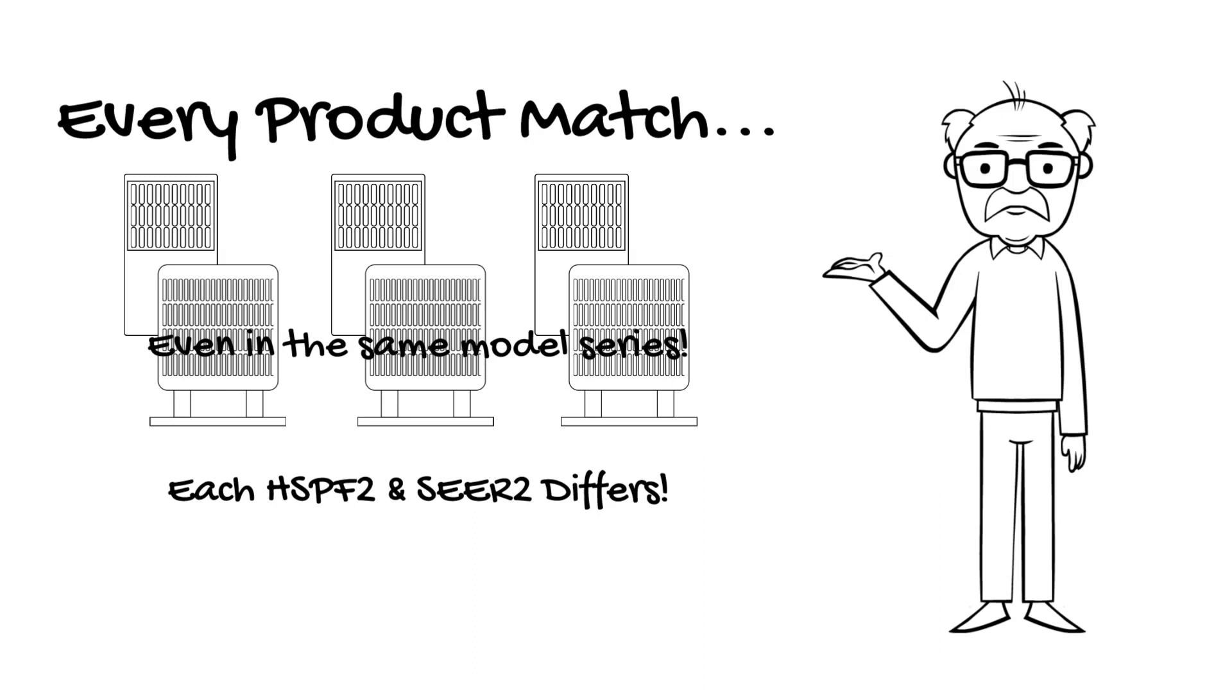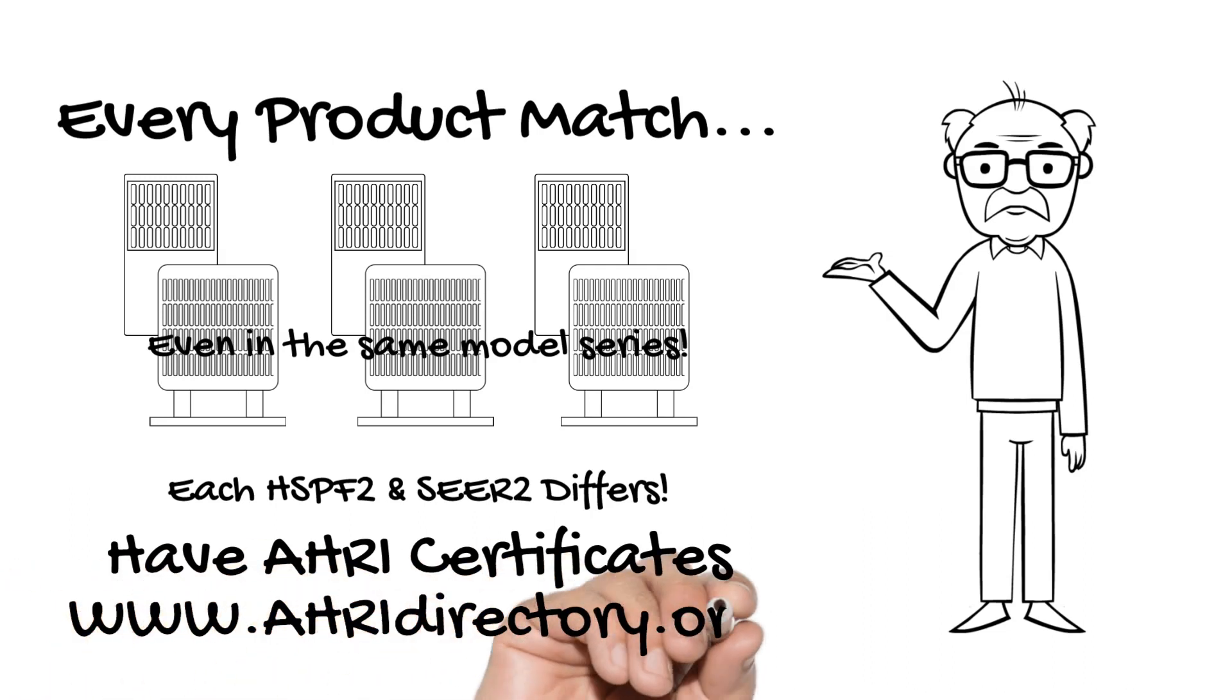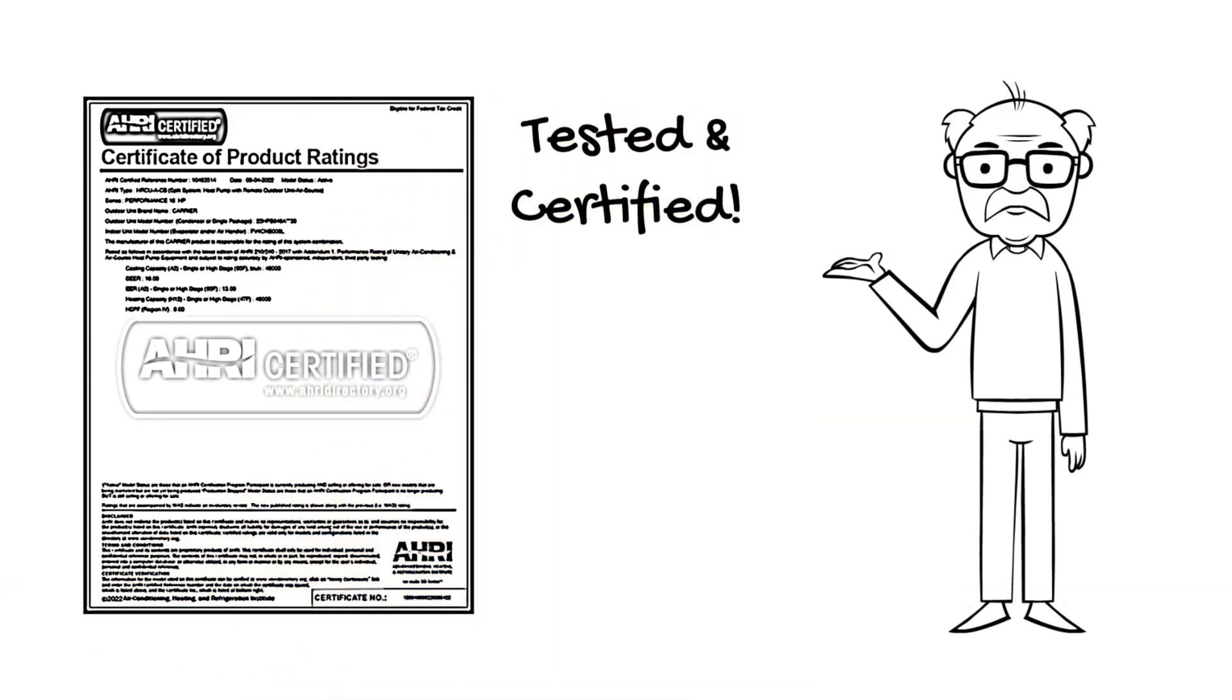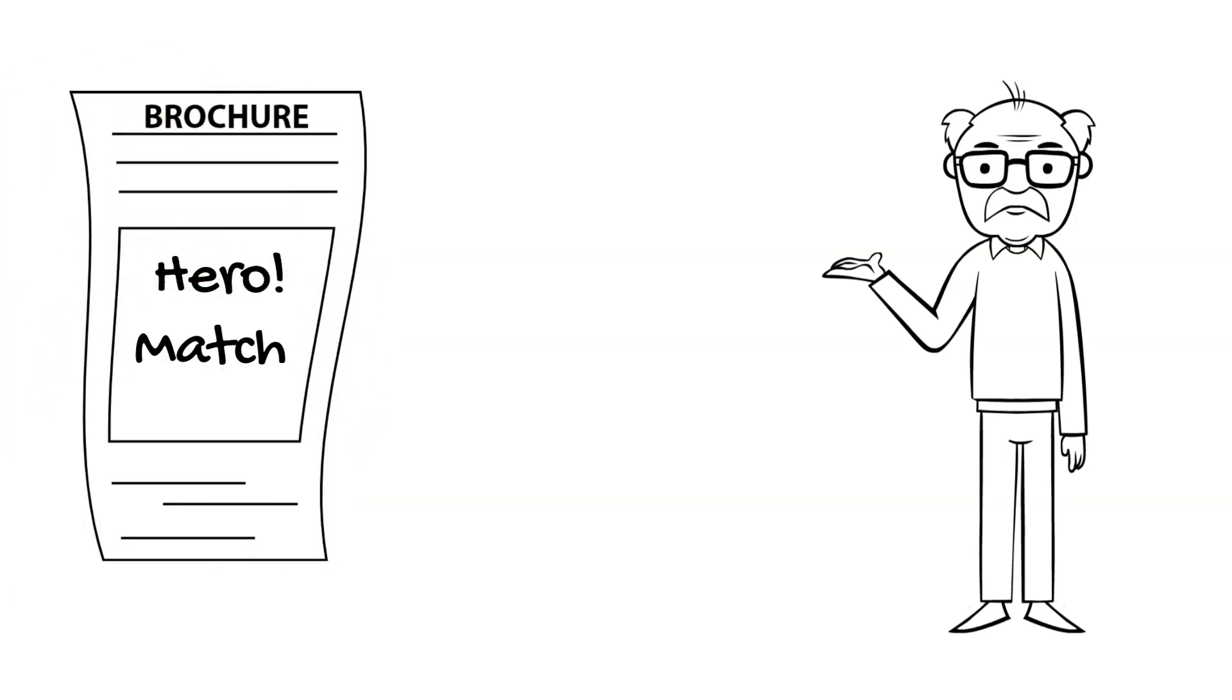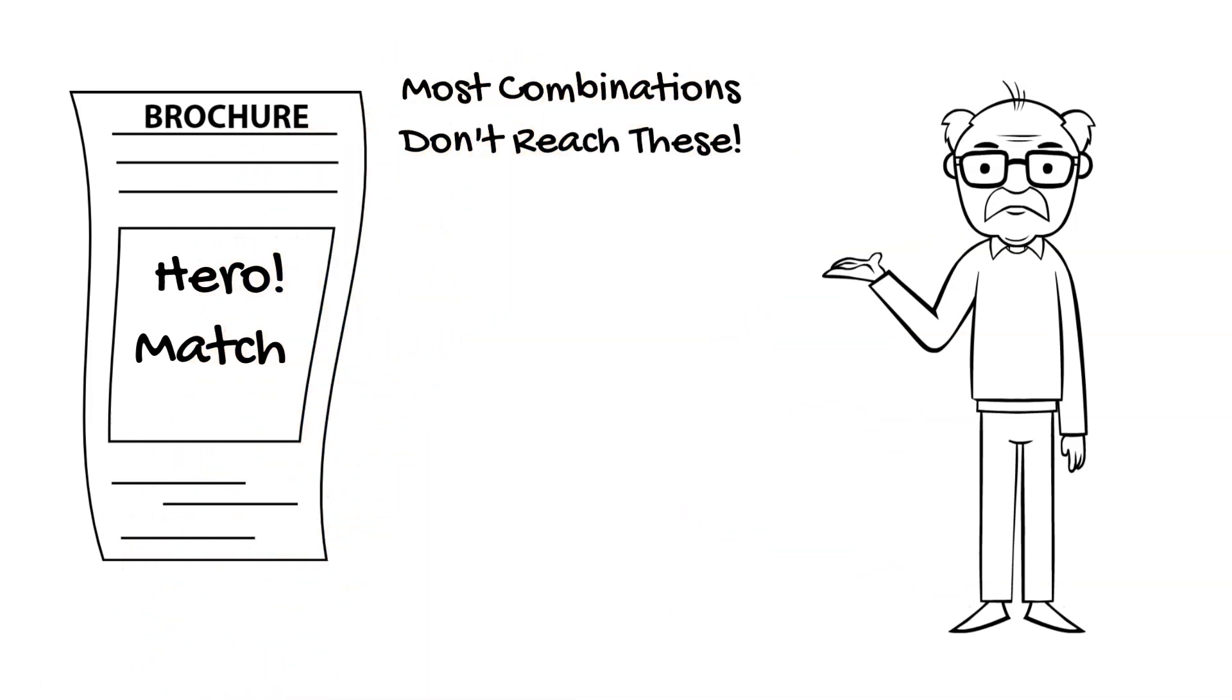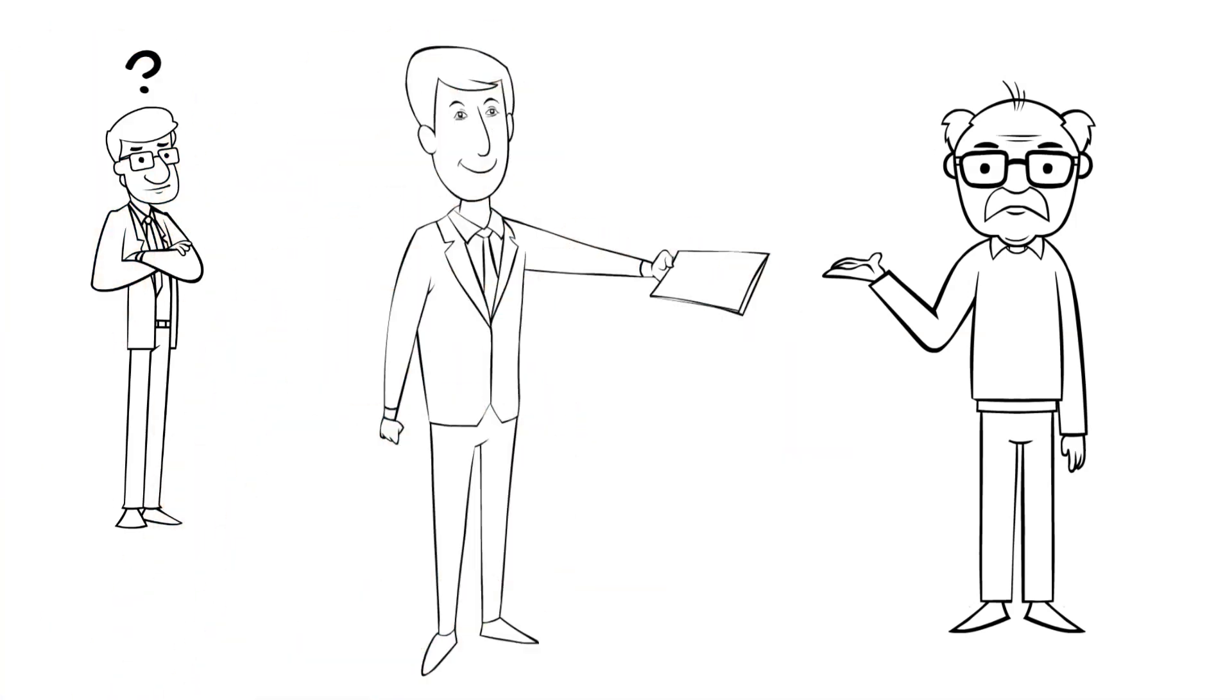Be certain the product matches you are considering for purchasing have published certified values found on www.ahridirectory.org. This means that they have been tested and a certificate is available with the published results for you to consider. Most sales brochures only show you the hero matches with the largest numbers. However, most product combinations do not reach these. Be careful. Brochures might be misleading. The company offering you the equipment should be able to provide the published efficiency information for you if you ask, but better yet, they will provide it to you without your asking.